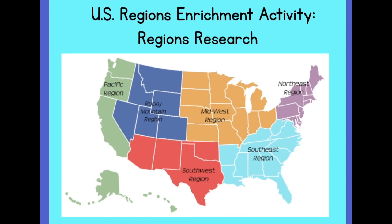We have included an optional United States Regions Enrichment Activity. You can choose a region of the United States and research the climate, physical features, and population, and how the location of the region affects the way people live, including their food, clothing, shelter, transportation, and recreation. Write or tell about what you learned. You could even create a video pretending to be a travel reporter.